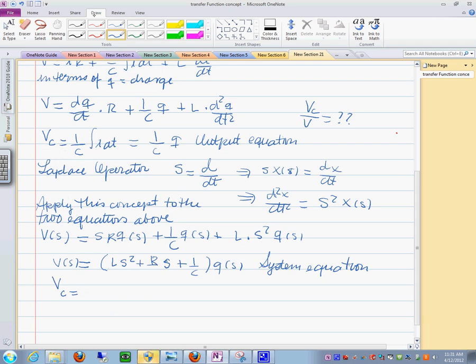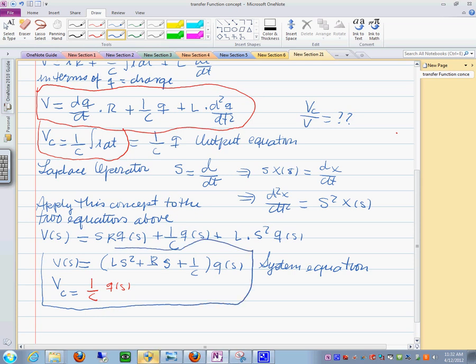The output equation, if we concentrate now, in here you have 1 over C times Q of S. Let me go back here. So you see we still need to find a relationship between these two.